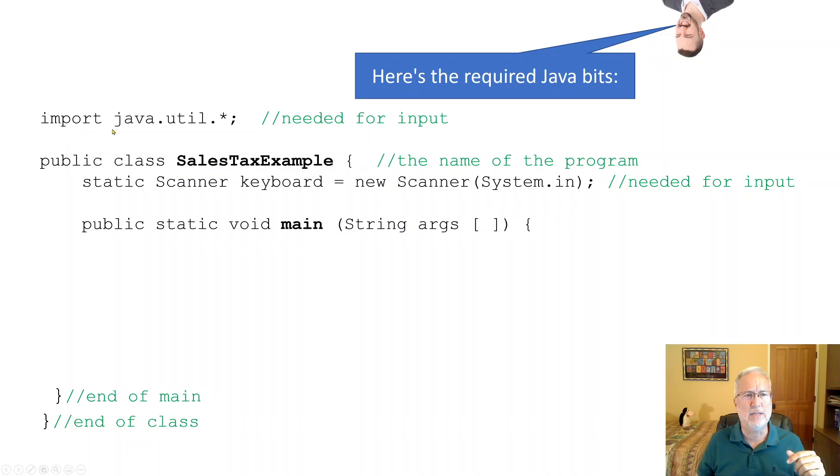Okay. So here's the required Java bits to get input. We have an import statement from the Java utilities. We have a scanner. So this allows us, this is a program that allows us to get information from the keyboard into our program. We have main and in main, in class. So that's the basics there.